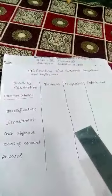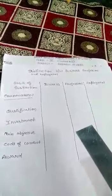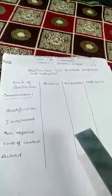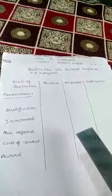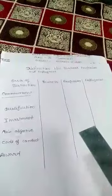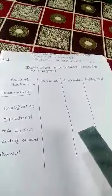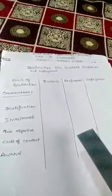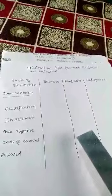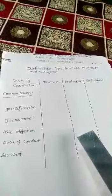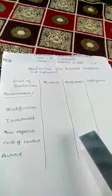In profession, the code of conduct is prescribed by the professional association. Every profession has its own association which sets the code of conduct, and every professional must follow it. For example, all doctors must follow the rules and regulations of their medical association, and all advocates must follow the code of conduct set by their bar association.